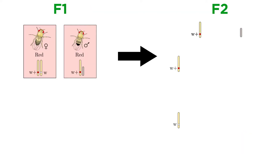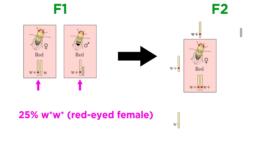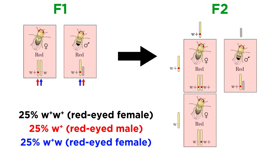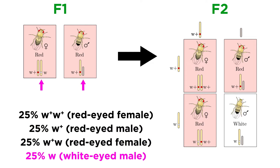But then, for the F2 generation, 25% would be homozygous dominant, 50% would be heterozygous, with the presence of the white allele or the Y chromosome being irrelevant to the phenotype, and 25% would have the white allele and the Y chromosome, thus missing the red allele and possessing white eyes. But all of these flies will necessarily be male, which is indeed what was observed.